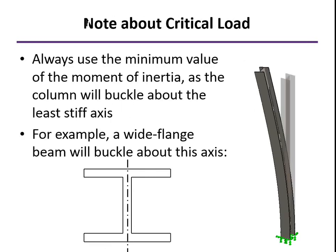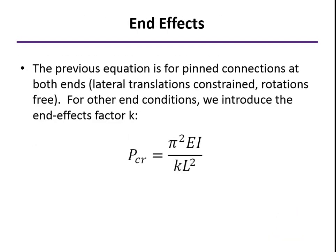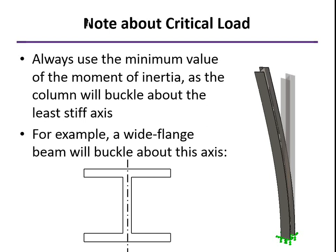One more thing about the critical load: remember, we ended up with something involving the bending stiffness, EI. Always use the lowest value of I, that is the least stiff axis, when you're doing an analysis. In this example, the beam may be designed to bend about its strong axis, but when we put a compressive load on it, unless we brace it some way, we don't have control over which way it's going to buckle, so we use the value of the least stiff axis.